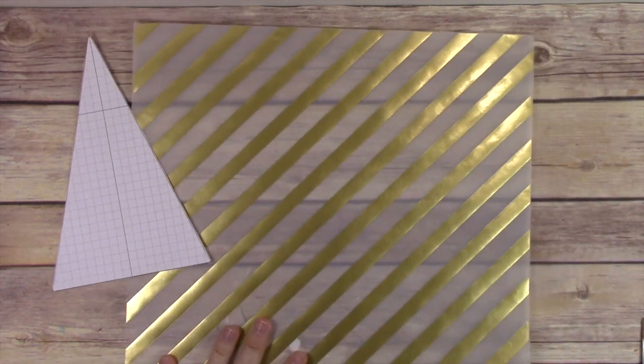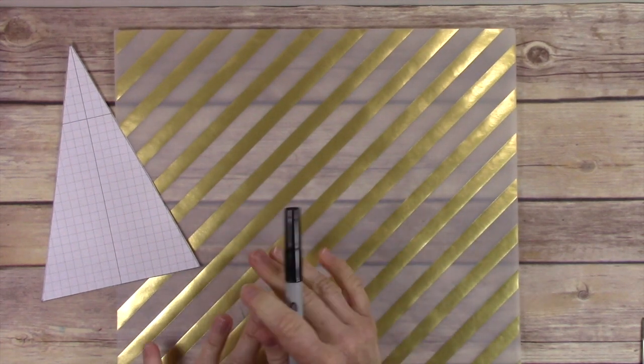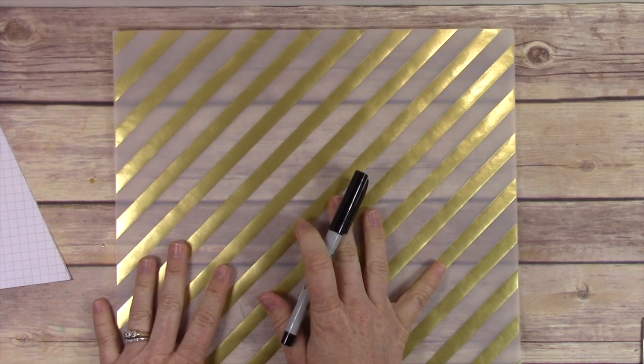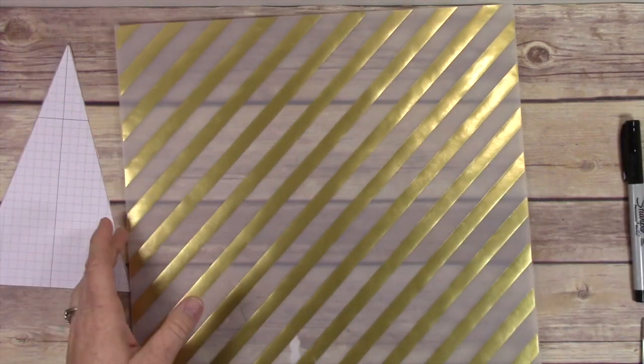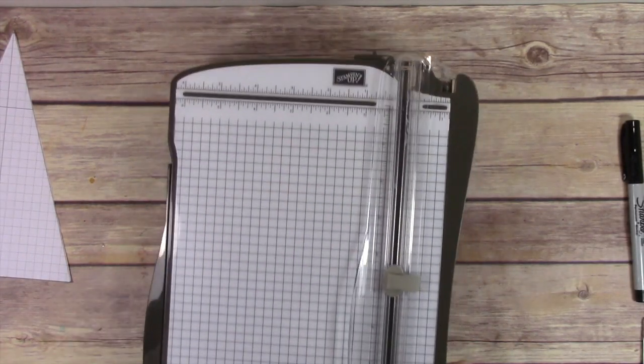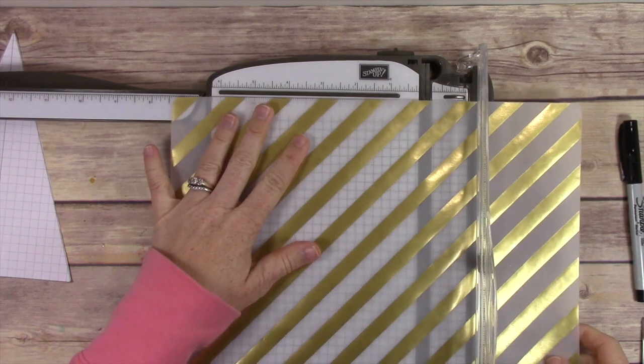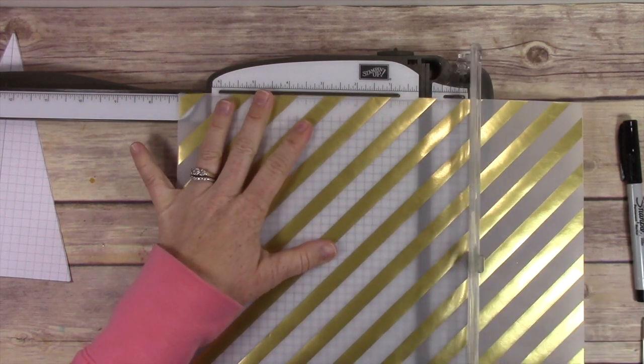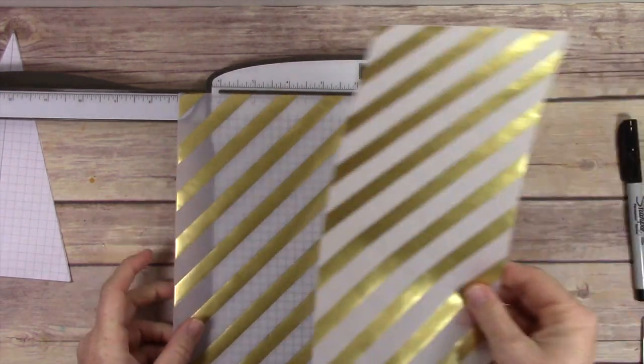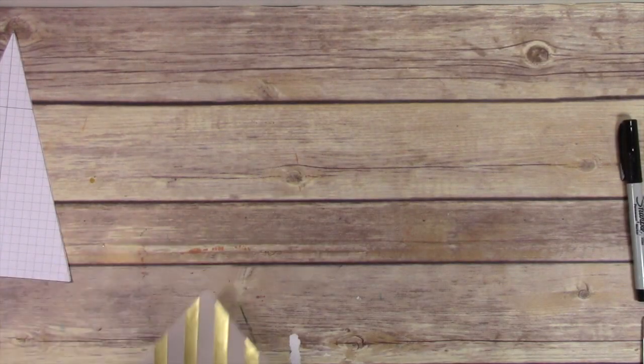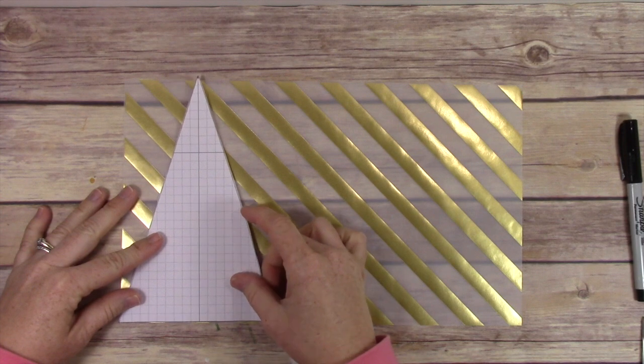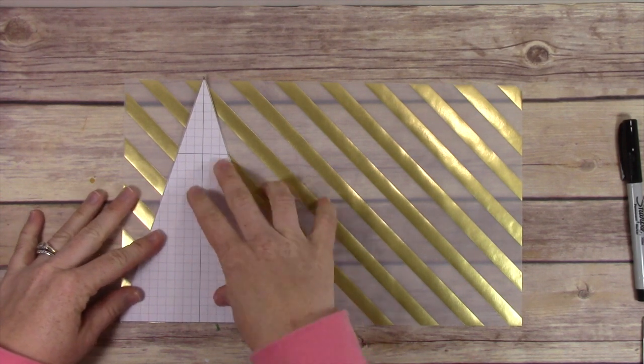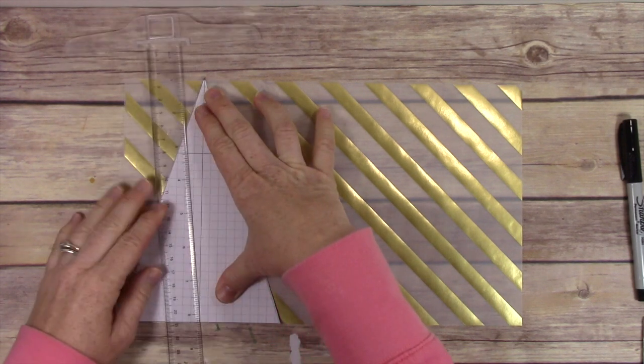For my banners, I wanted to use some vellum and designer series paper. What you have to do to get started is cut your paper at seven and a quarter inches using the Stampin' Up trimmer or whatever trimmer you have. You want to cut it before you make your banners because otherwise you'll have a mess.